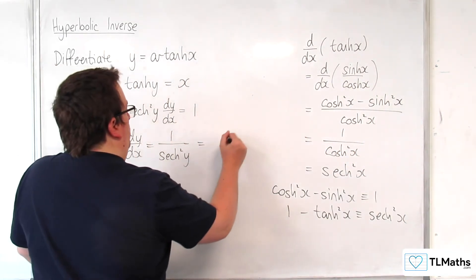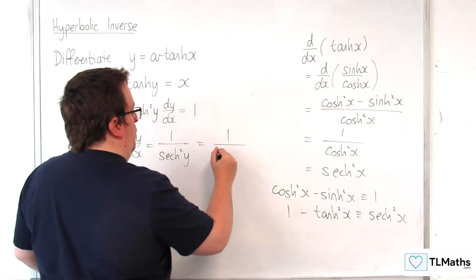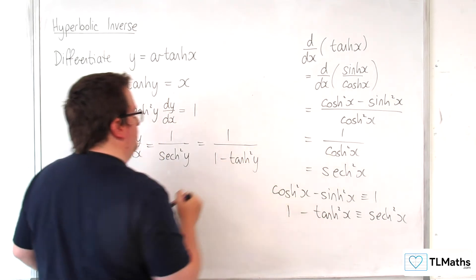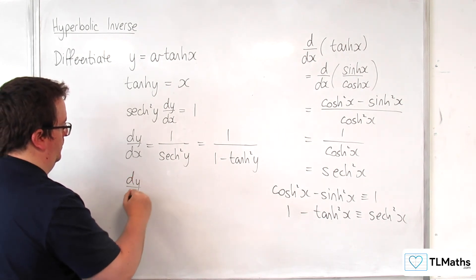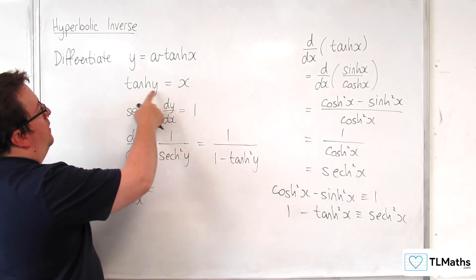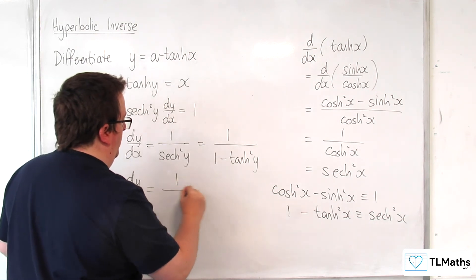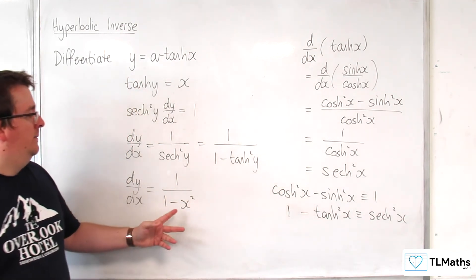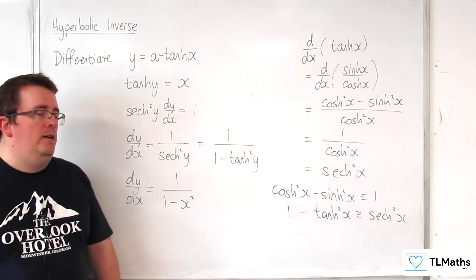So this is going to be equal to 1 over 1 take away tanh squared y. And tanh y was equal to x, so this is 1 over 1 take away x squared. And so that is the derivative of artanh x.